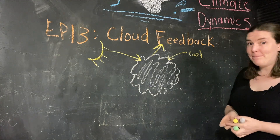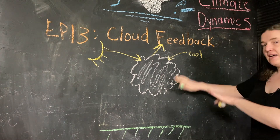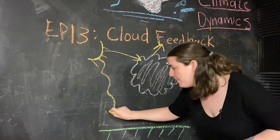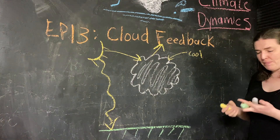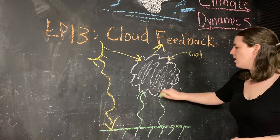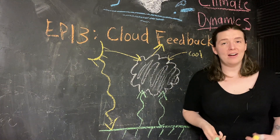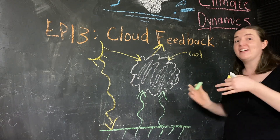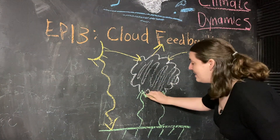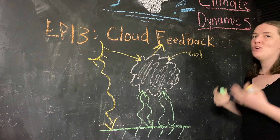Now we've got to talk about the cloud base. For the sunlight that doesn't hit the cloud top, it makes it down to the surface, is absorbed and re-emitted by the earth as outgoing longwave radiation. Now we've got to take into account the fact that this cloud is made of water, and like we talked about in the last video, water is a greenhouse gas. So the water is going to tend to absorb and re-emit this radiation back to the surface. So the cloud base tends to be warm.